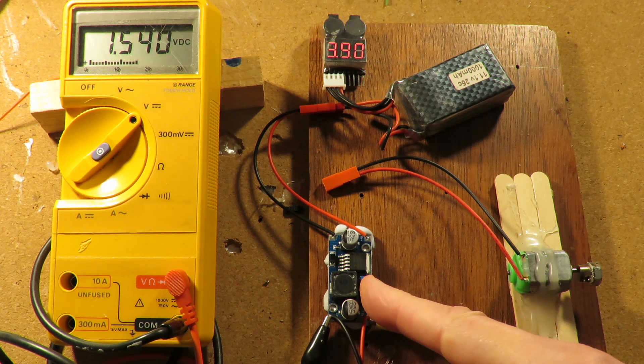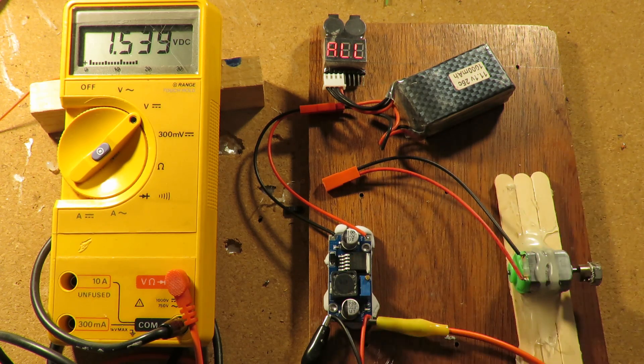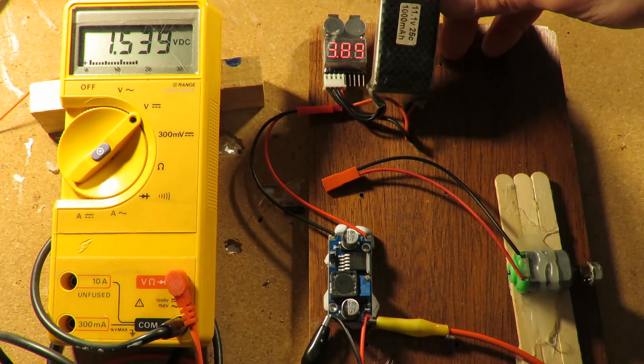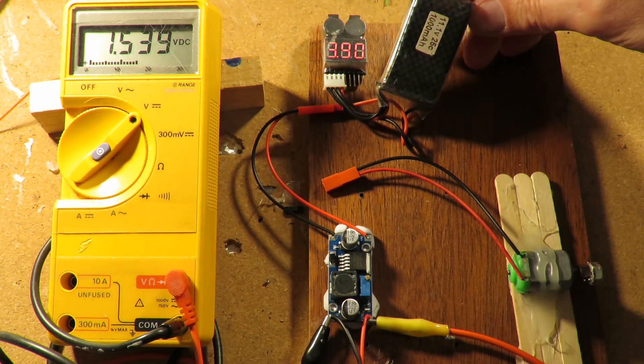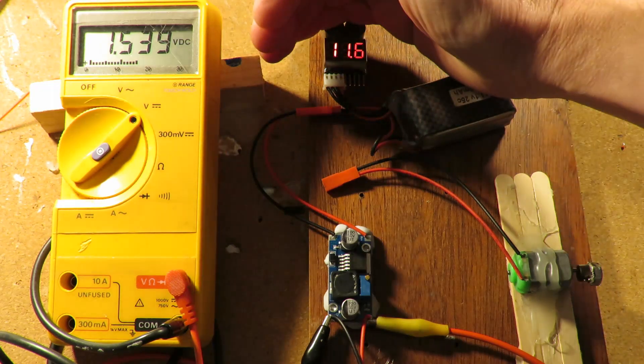They'll step down the DC voltage from something to something else. So for example, I've got a 3s LiPo battery here, nominally 11.1 volts. At the moment it's showing...